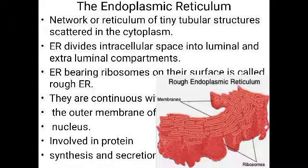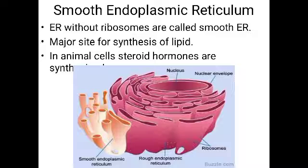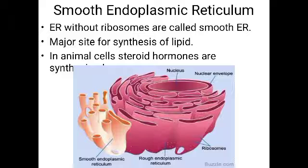If ribosomes are seen attached to the endoplasmic reticulum, we call it rough endoplasmic reticulum (RER). The endoplasmic reticulum bearing ribosomes on its surface is called rough endoplasmic reticulum. If ribosomes are not present on the surface, it is called smooth endoplasmic reticulum (SER). So endoplasmic reticulum is of two types.